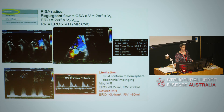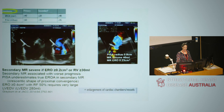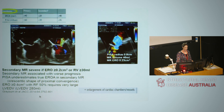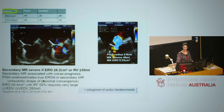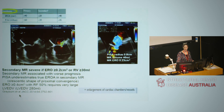Always check: does the mitral valve E-velocity max fit with your PISA measurement? Have you measured PISA accurately? Have you averaged over five cycles for atrial fibrillation? Also, the ERO cutoff of 0.4 applies to primary mitral regurgitation. For secondary MR, the severe ERO cutoff is 0.2. PISA underestimates ERO in secondary MR because of the chrysanthemum shape of the flow convergence. Secondary MR carries the worst prognosis, and we shouldn't wait until ERO of 0.4, which is associated with very large end-systolic volumes.